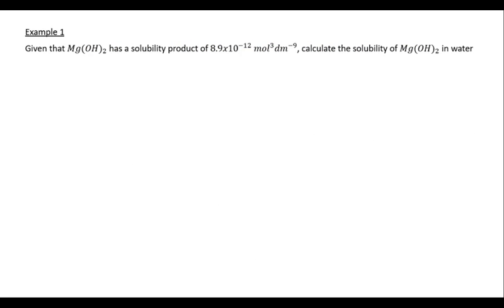Let's look at a worked example. Given that the salt magnesium hydroxide, Mg(OH)₂, has a solubility product of 8.9 × 10⁻¹² mol³ dm⁻⁹, calculate the solubility of magnesium hydroxide in water.